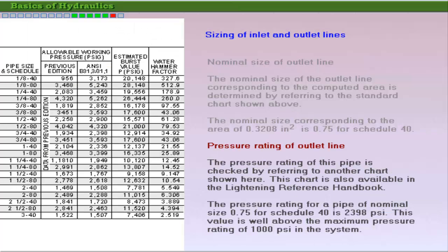To determine whether the given wall thickness is sufficient, refer to the pressure ratings chart for welded connections in seamless steel pipes in the Lightning Reference Handbook. The pressure rating of 2,398 PSI of the pipe is more than the maximum pressure of 1,000 PSI in the system. Hence, a pipe size of 3/4 of an inch for Schedule 40 is suitable for the pump outlet.